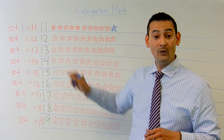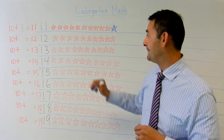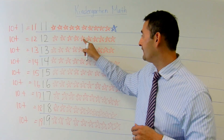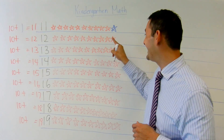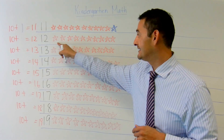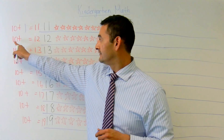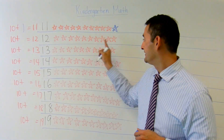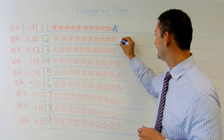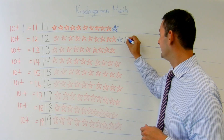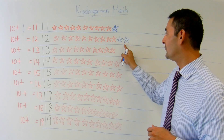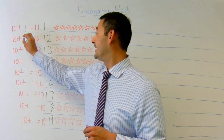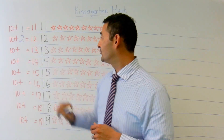Now let's take a look at 12. How do I decompose 12? Here again, I've got 1, 2, 3, 4, 5, 6, 7, 8, 9, 10. I've got 10 ones. How do I make this number to be 12? 10, 11, 12. I've got 12. I've got 2 more ones. So 10 ones plus 2 more ones equals 12.